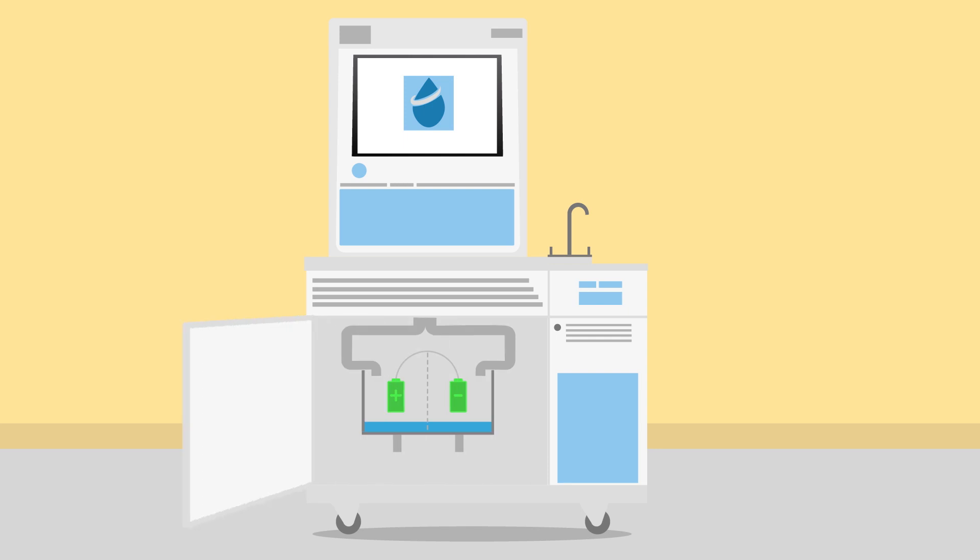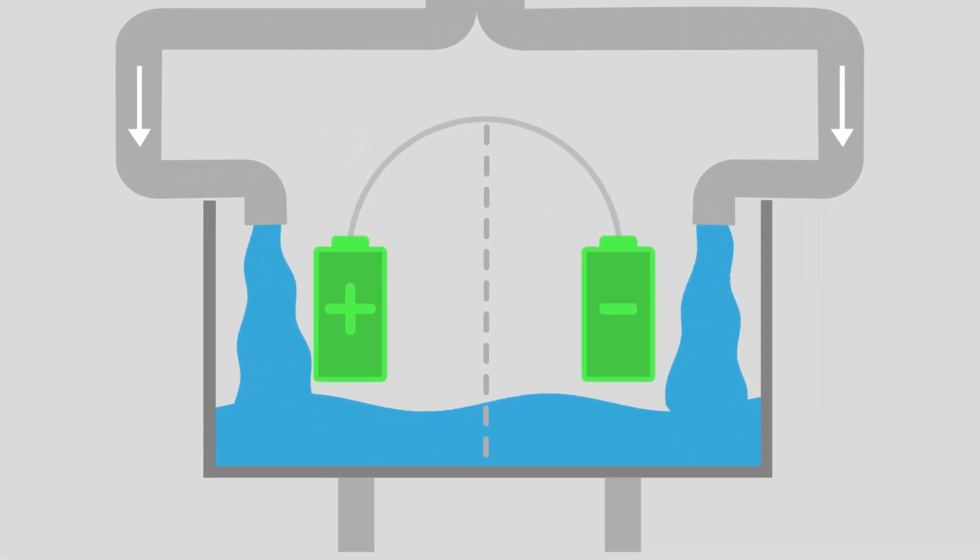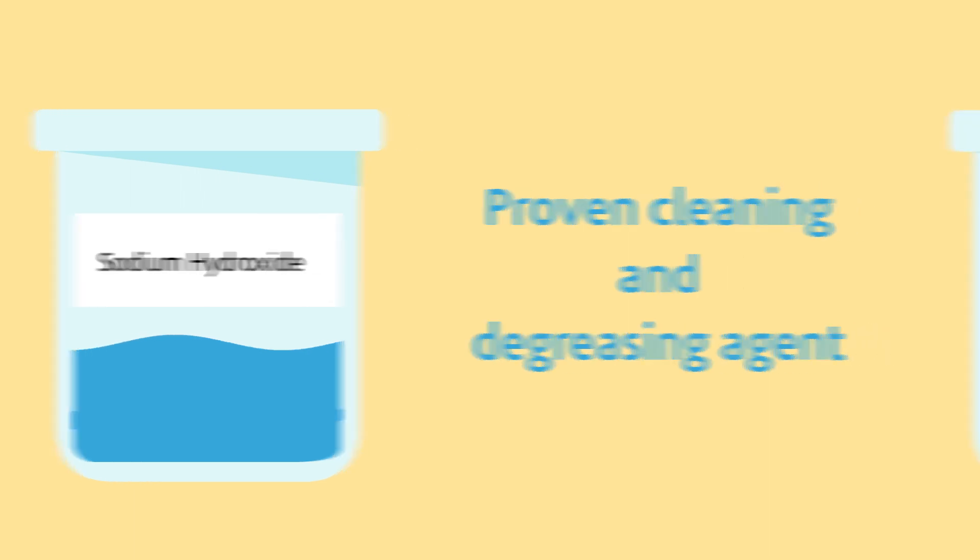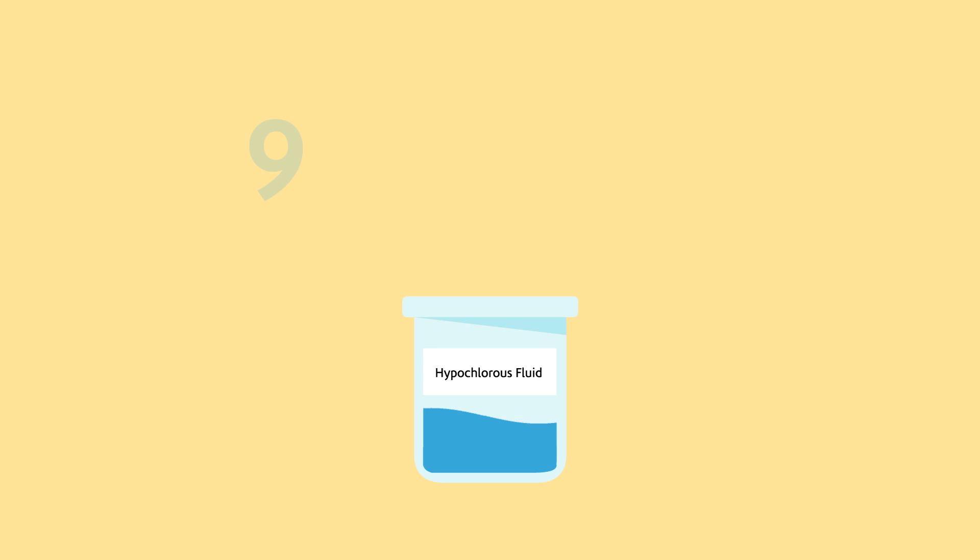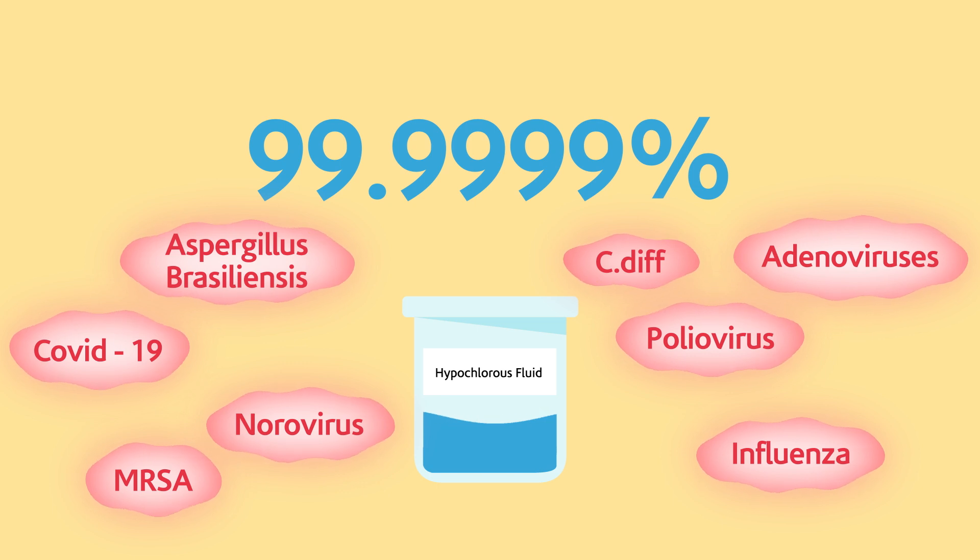An on-site kiosk and filling station pass weak salt brine through an electrolytic cell, changing the chemical properties of the salt and water to produce sodium hydroxide, a proven cleaning and degreasing agent, and hypochlorous fluid, a decontaminant proven to kill 99.9999% of all known hospital-associated infection pathogens.